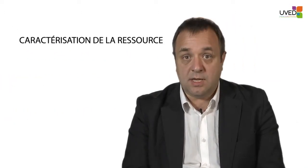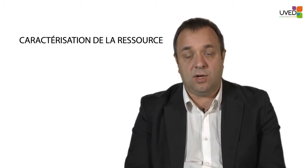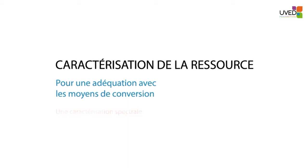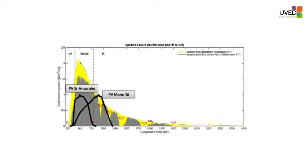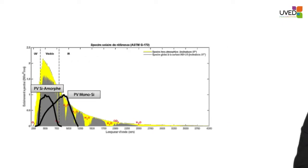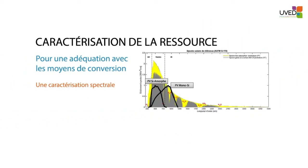Because there are several options to convert the solar resource, these methods require a very specific characterization of that resource. Characterization can be achieved with two methods. The first method is spectral characterization. This graph shows on the horizontal axis the wavelength and on the vertical axis the illumination, and we see that energy distribution is not the same depending on the wavelength. We have two examples of spectral sensitivity with two different photovoltaic systems, and because the sensitivity differs, it is highly important to characterize the solar resource adequately for each conversion method depending on spectral sensitivity.